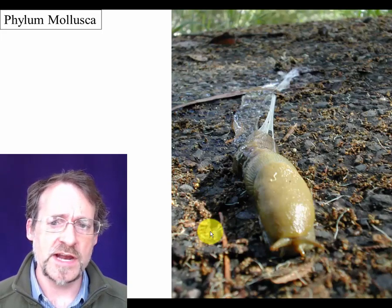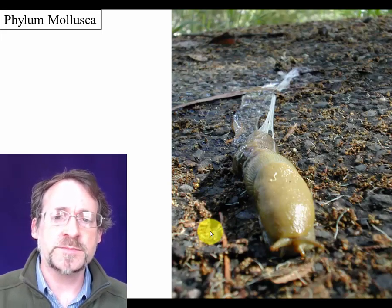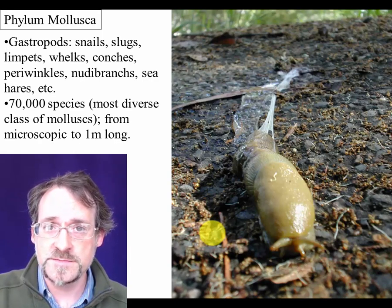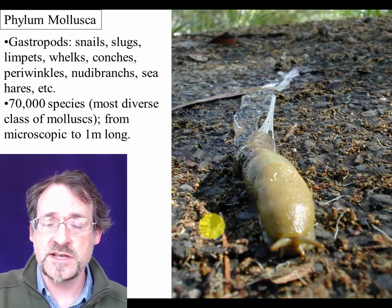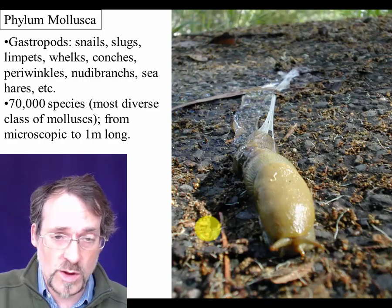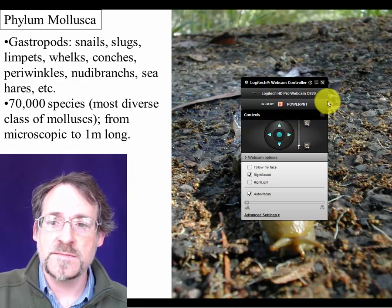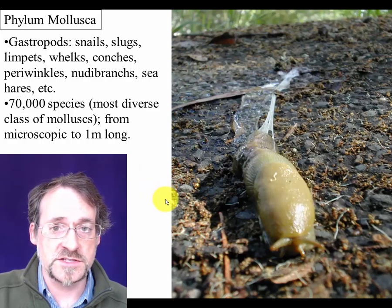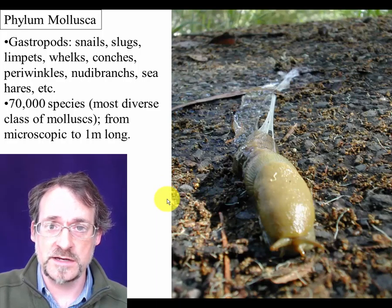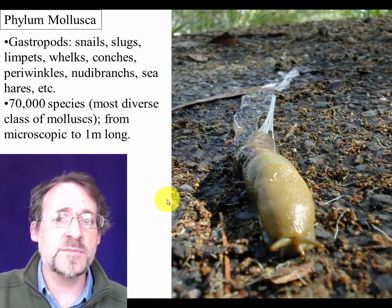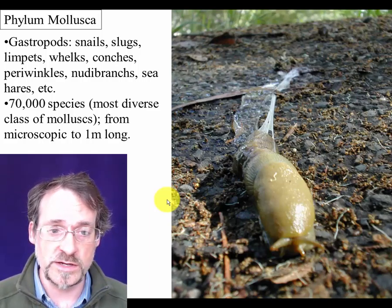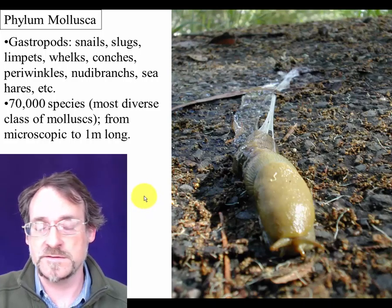The first group is the gastropods — the familiar land snails and slugs, as well as the less familiar aquatic snails and sea slugs. There are also many other organisms in this group: whelks, conchs, periwinkles, nudibranchs, sea hares — a vast variety. This is the most diverse group of mollusks, which you should remember is a very diverse phylum to begin with. There are about 70,000 species of gastropods.